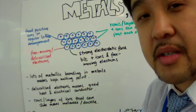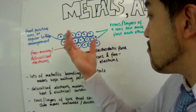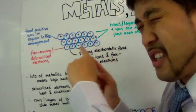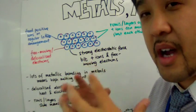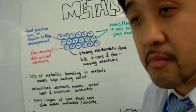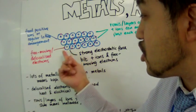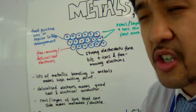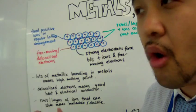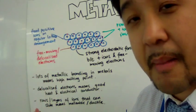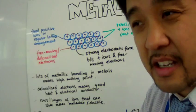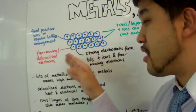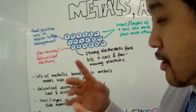Metals have high melting points, and why is that? Because of the many, many strong electrostatic forces — metallic bonding is pretty strong. And if each positive ion has on average two delocalized electrons — like in calcium or aluminum — then you're going to get stronger metallic bonding.